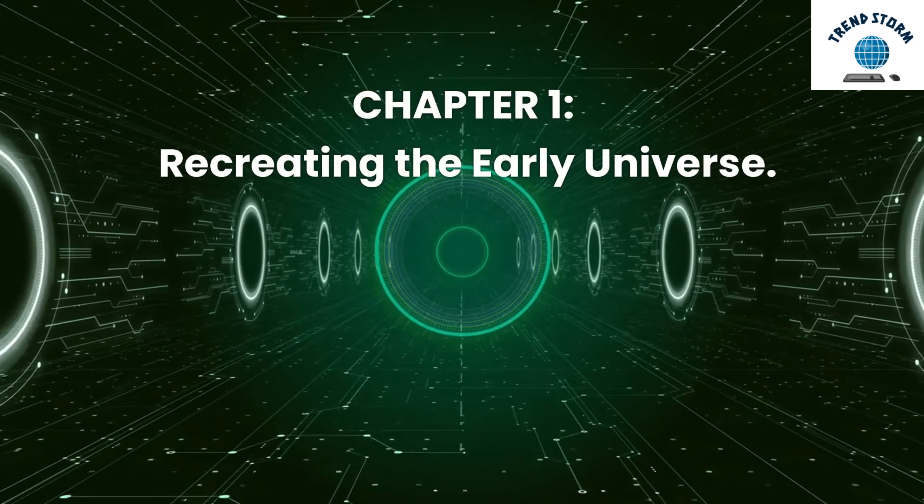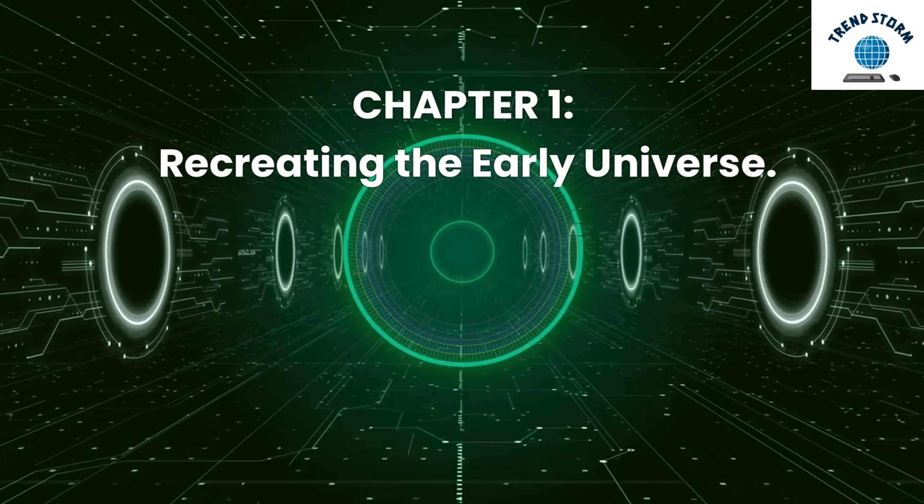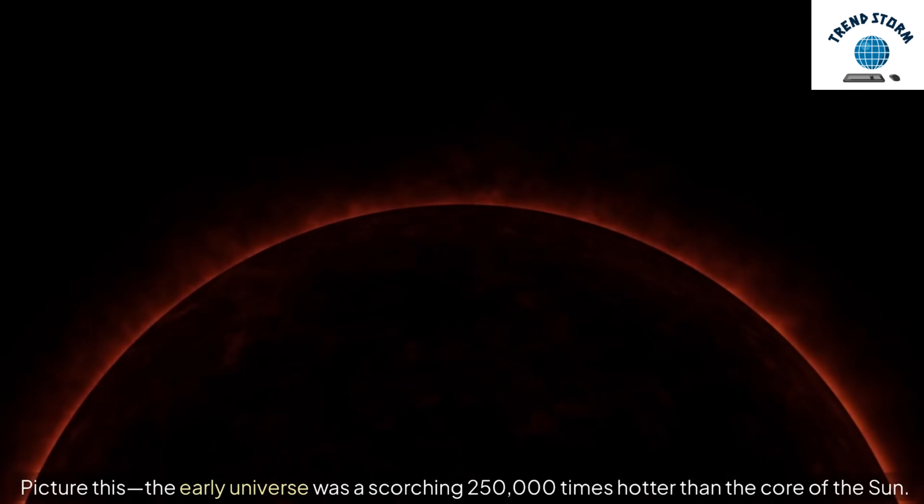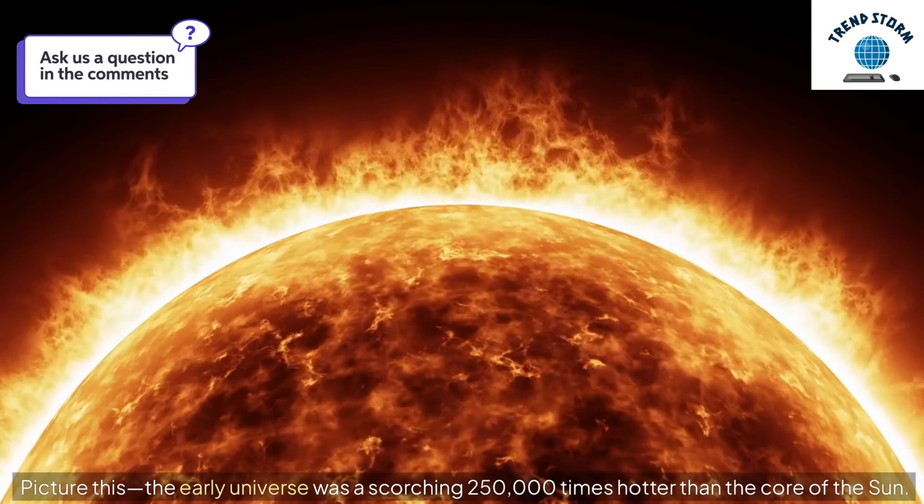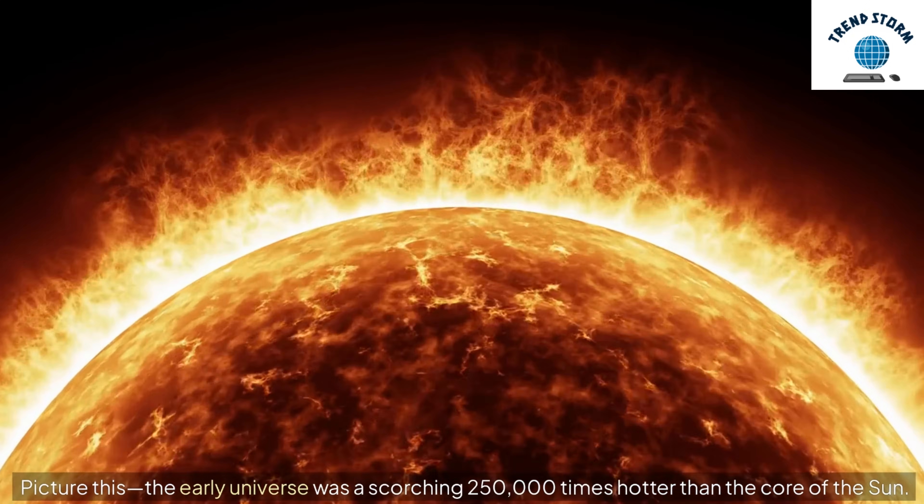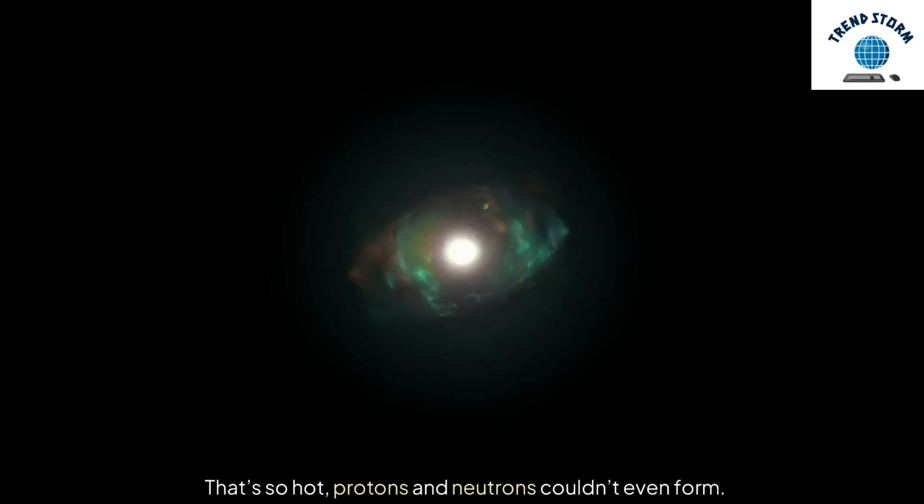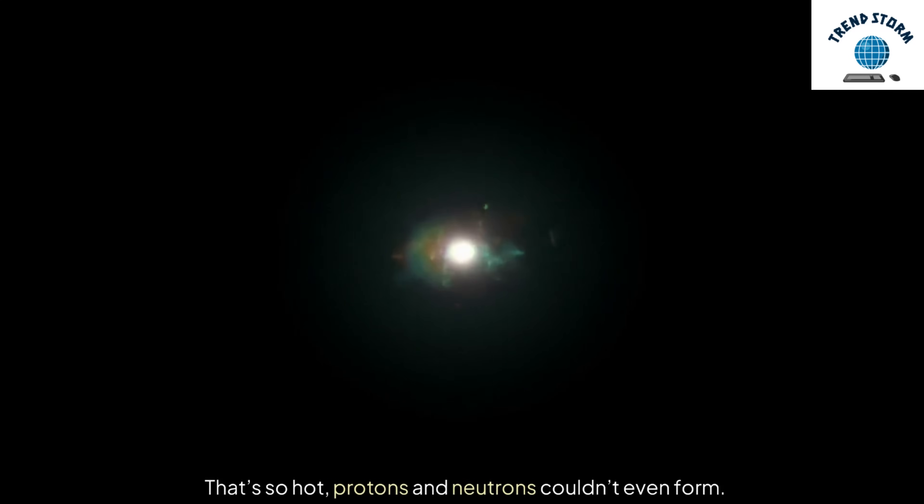Chapter 1: Recreating the Early Universe. Picture this, the early universe was a scorching 250,000 times hotter than the core of the sun. That's so hot, protons and neutrons couldn't even form.